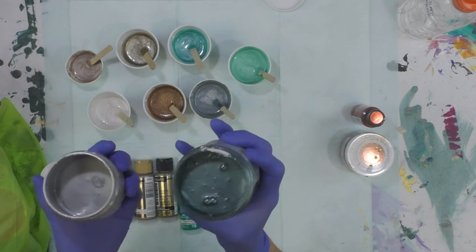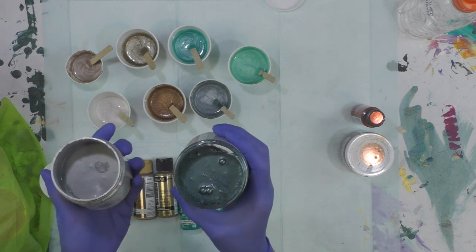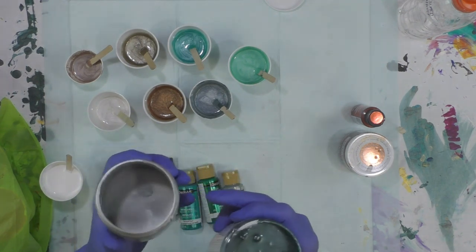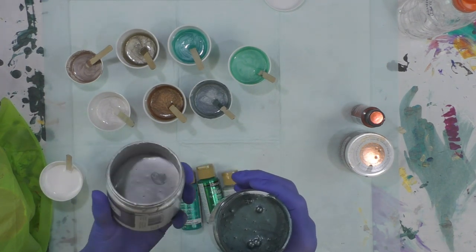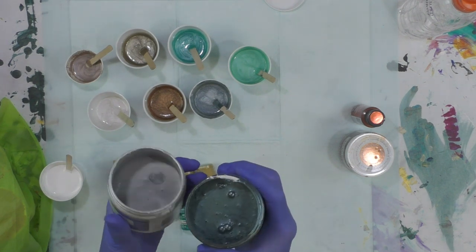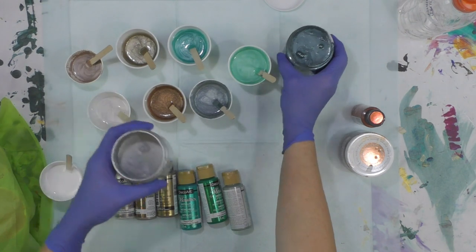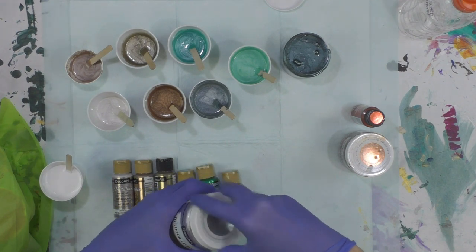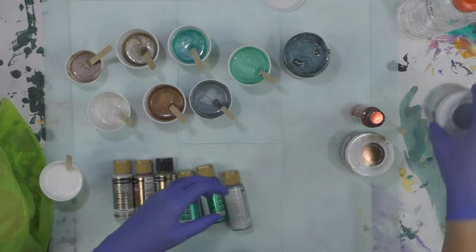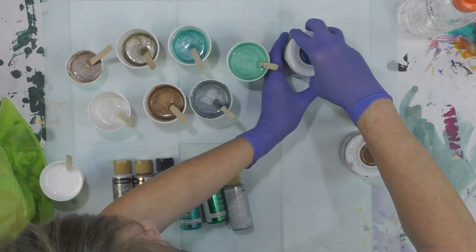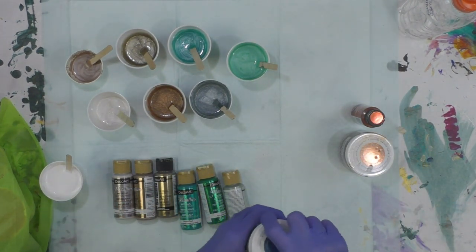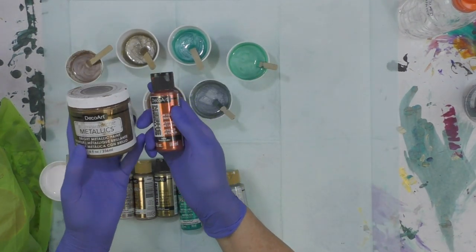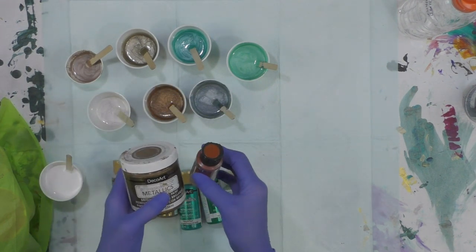This one is a mixture of the silver and the pewter. I wanted you to see the difference in how deep the pewter is and it's got a bluish cast almost to it. It's one of my favorites of their metallics besides the 24 karat gold. The silver is very pale. It almost has a pearl effect when it dries. So I put some of the pewter into the silver to get that color in my cup. It's a little deeper than the silver that is straight out of the jar.